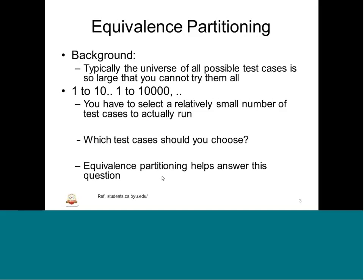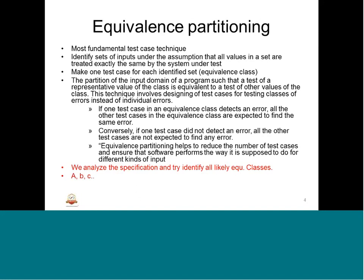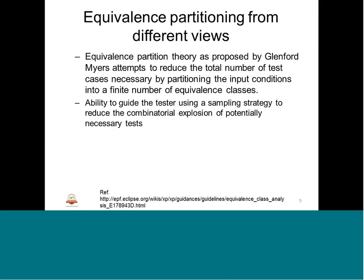Equivalence partitioning — we know why we need it: because we cannot afford to have test cases simply because we have the possibility of doing tests with a different number of inputs. Since a system can behave either in a normal way or an abnormal way for a typical requirement, we need to test only sufficient levels of inputs. The reduction is by having partitioning, that is called equivalence partitioning. The basic purpose is to reduce the total number of test cases by partitioning the input conditions into a finite number of equivalence classes.